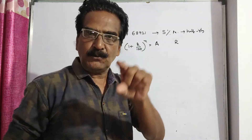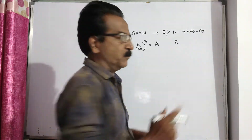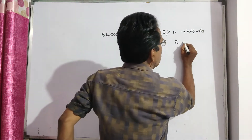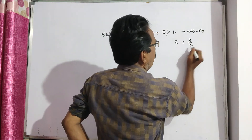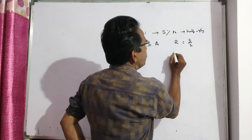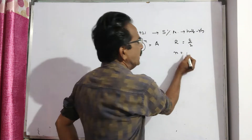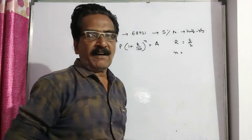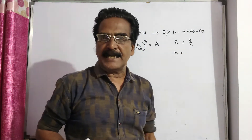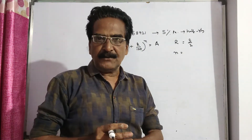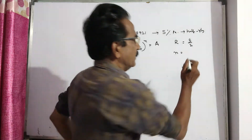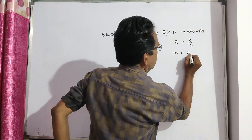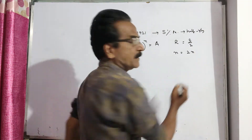Since interest is compounded half yearly, r is taken as r/2, that is 5/2. Coming to n, since it is half yearly compounded, n is taken as 2n.